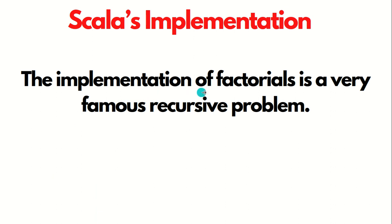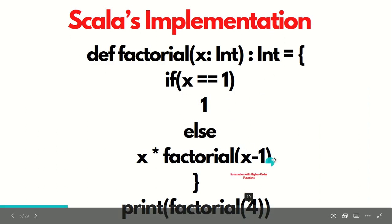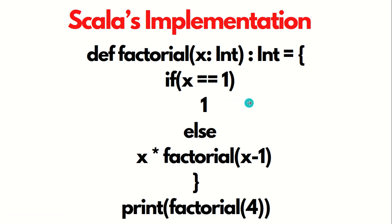Let's see an example in Scala — the very famous example for recursion: calculating the factorial of a number. Factorial is used in almost every programming language when learning recursion. The factorial of a number is achieved by multiplying all consecutive numbers starting from one up to the number. For example, factorial of 4 is 1 × 2 × 3 × 4 = 24.